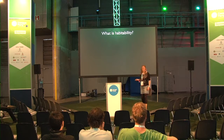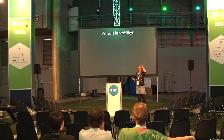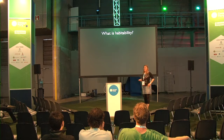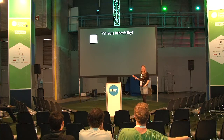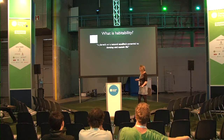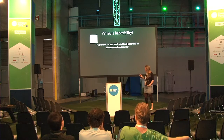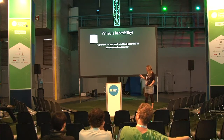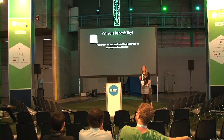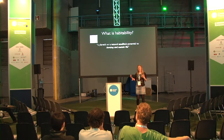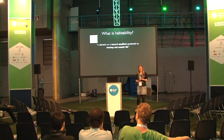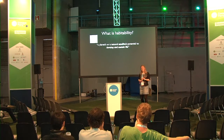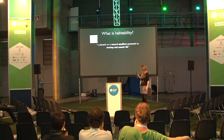We have to start with a definition. What I tend to do is read an encyclopedia — and the most useful encyclopedia is obviously Wikipedia. Wikipedia defines habitability as a planet or a natural satellite, because we're not only talking about planets. If you look in our solar system, we also study the moons Europa and Enceladus for habitability. So it's both planets and satellites, and their potential to develop and sustain life.